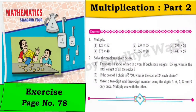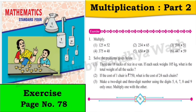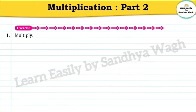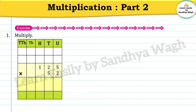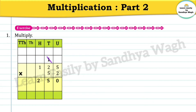Now in today's video we are going to solve the exercise given on page number 78. Question 1: multiply 125 by 52. Let's multiply the units place first. Two fives are 10, so we will write 0 in the units place and 1 will go as a carry over. Now two twos are four, four plus one five. Two ones are two. Let's write zero in the units place.